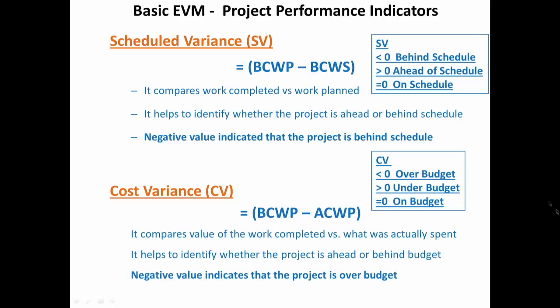Based on BCWP and BCWS, we get the schedule variance. These are the project performance indicators. BCWP minus BCWS gives schedule variance: if less than 0 it is behind schedule, more than 0 it is ahead of schedule, and if equal to 0 the project is on schedule.